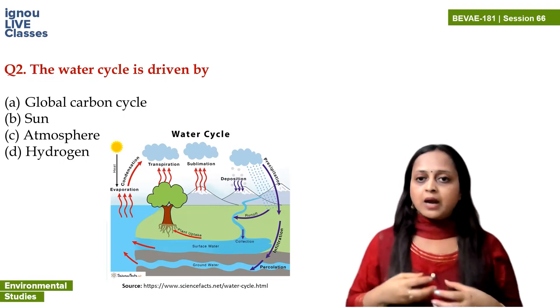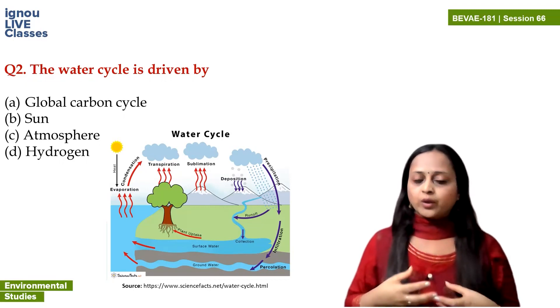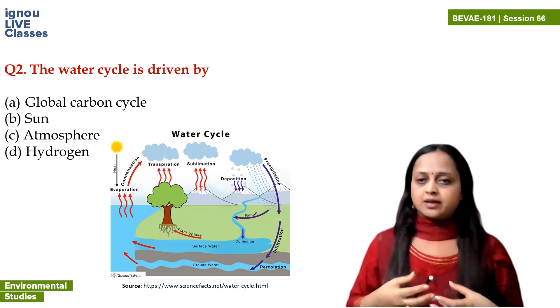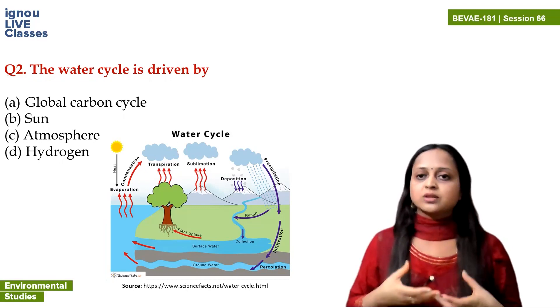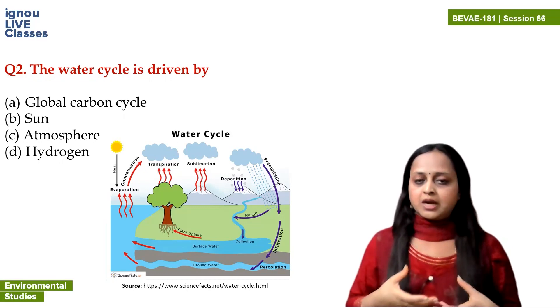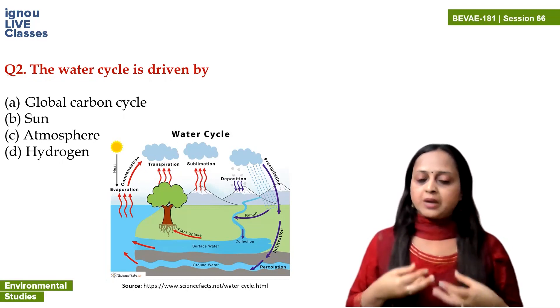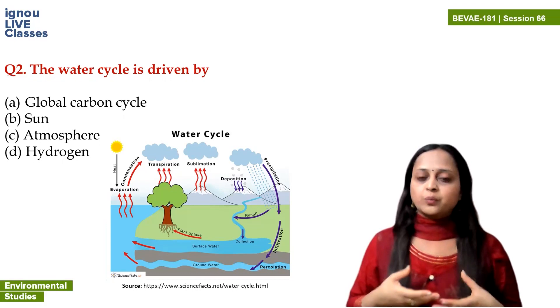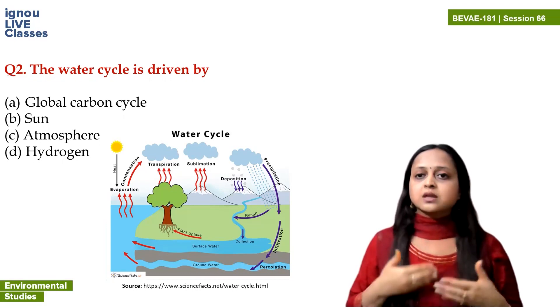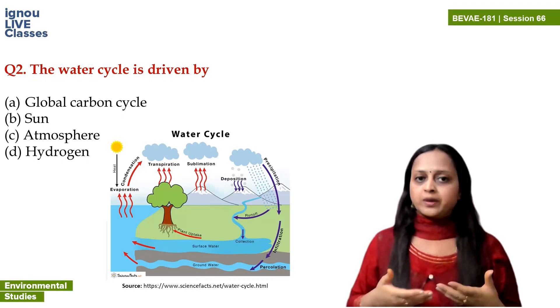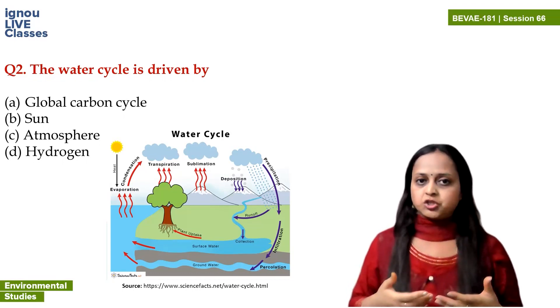Transpiration is when water present on the leaves of plants converts into vapors. So that is transpiration.